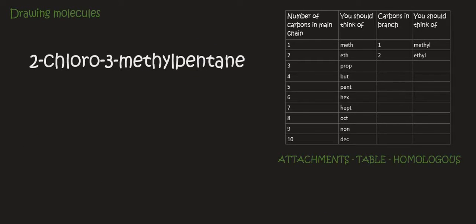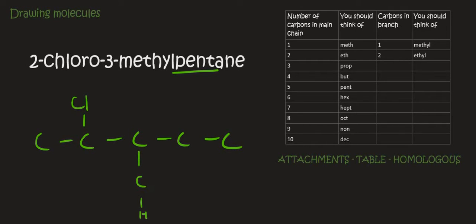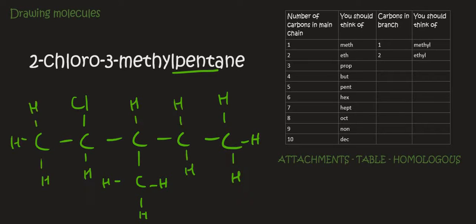Here's the next one. We look straight at the end where we've got 'pent' — that's 5 carbons. Then on number 2 we've got a chloro. On number 3 we've got a methyl. See how easy this is? Now you just fill in hydrogens everywhere else. Remember, you don't put hydrogens attached to this Cl — it's only carbon that has the ability to form 4 bonds. And so that's the structure for that one.